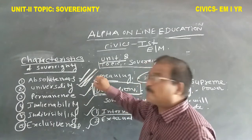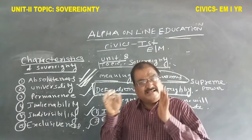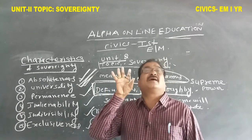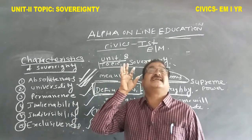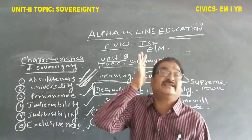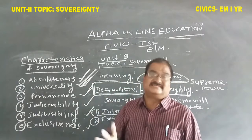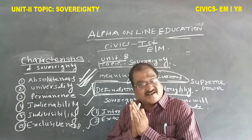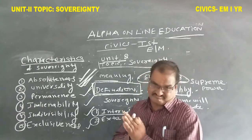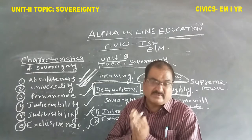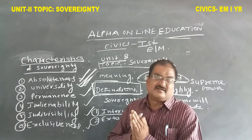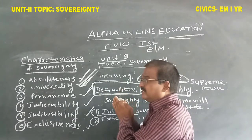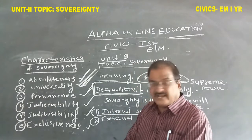Permanence means sovereignty is permanent. It exists as long as the state exists. When the state ends, at that time the sovereignty ends. So sovereignty is a permanent one — it does not disappear as long as the state is alive.